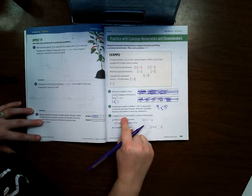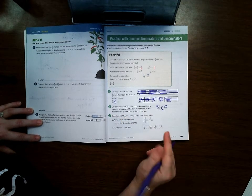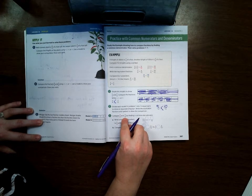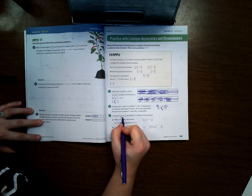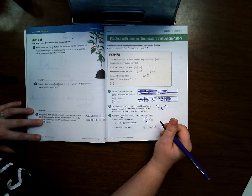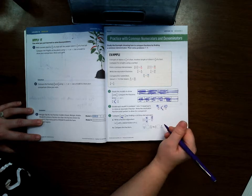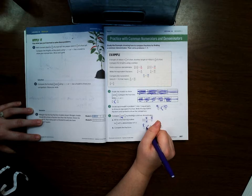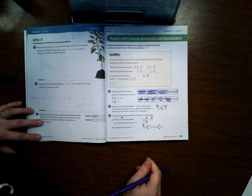Compare 2/3 to 9/12 by finding a common denominator. Well if we're doing 2/3, 3 times something equals 12. So I don't have to multiply by 12. I can multiply by 4 to get 12. So I'm going to multiply the top and the bottom by 4. So 3 times 4 is 12, 2 times 4 is 8. So now we're comparing 8/12 to 9/12. And obviously 9/12 is bigger. So that means 2/3 is smaller than 9/12.